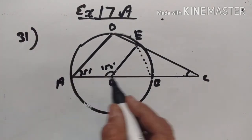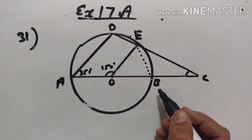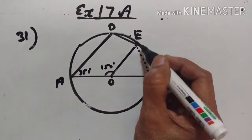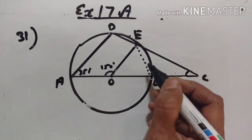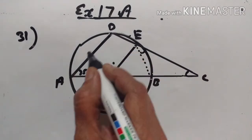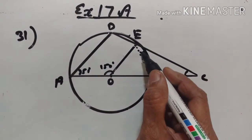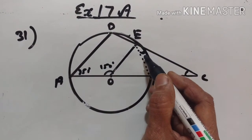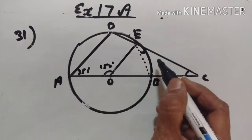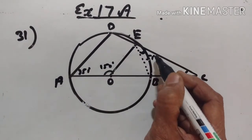Now, ABED is a cyclic quadrilateral. Therefore, angle CEB becomes the exterior angle of this cyclic quadrilateral. The exterior angle of a cyclic quadrilateral is equal to the interior opposite angle. So, angle CEB is equal to 51 degrees.